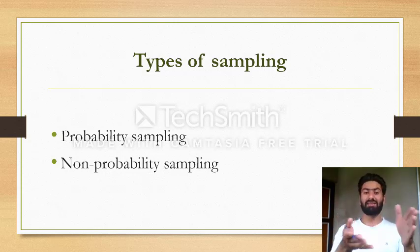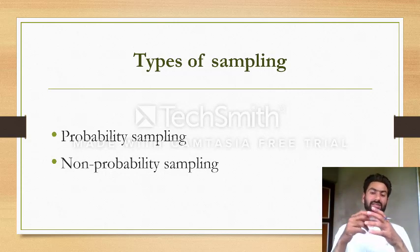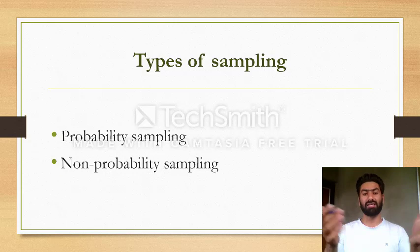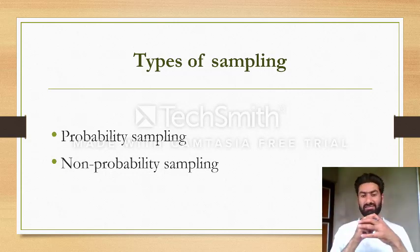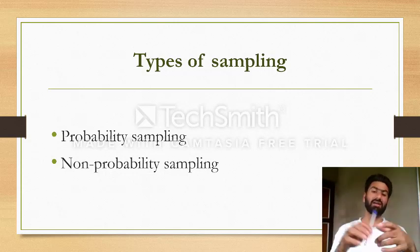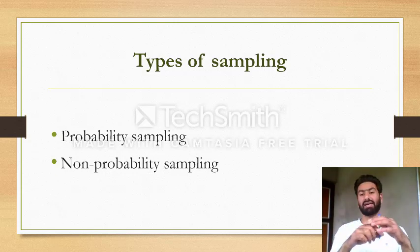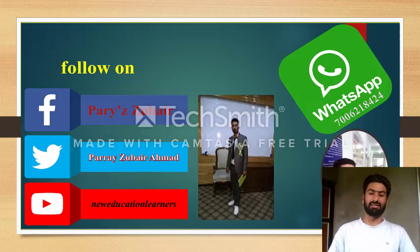Probability sampling has its own types: simple random sampling, systematic random sampling, cluster random sampling, and multi-stage sampling — which will be discussed in the next lecture. Non-probability sampling includes quota sampling, snowball sampling, and chunk sampling — to be discussed in another lecture. I hope you got a proper understanding of population and sampling. Thank you.